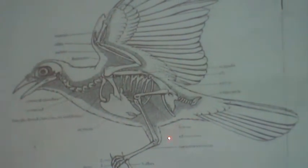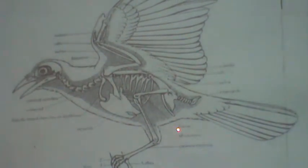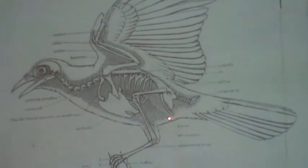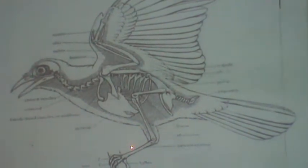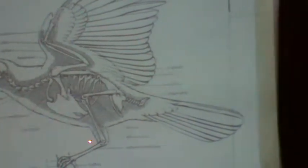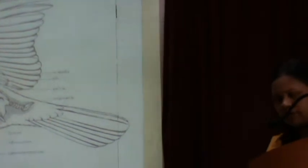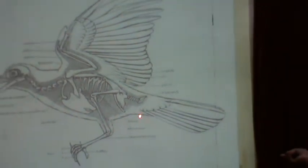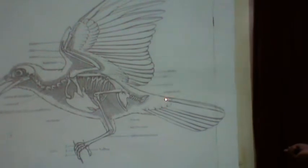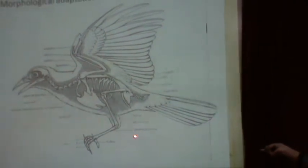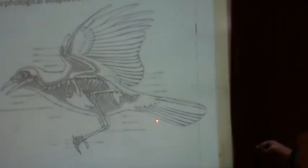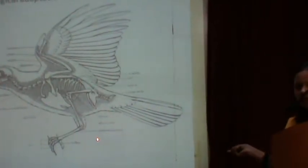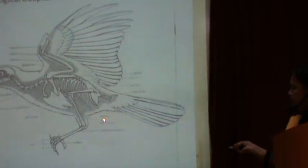A tail is present in the modern bird. Internally, only 13 or fewer caudal vertebrae are present. All these vertebrae fuse to form the pygostyle, and externally the tail is covered by feathers known as tail feathers.